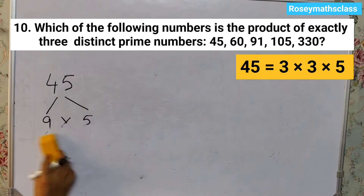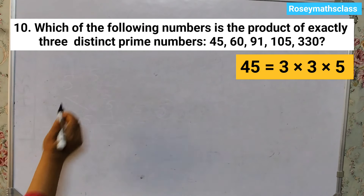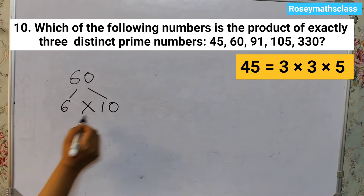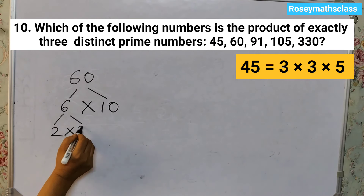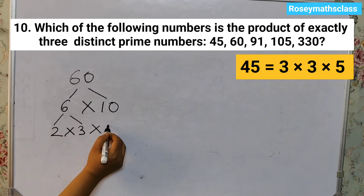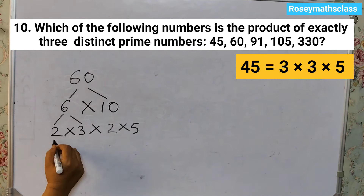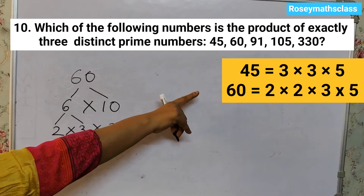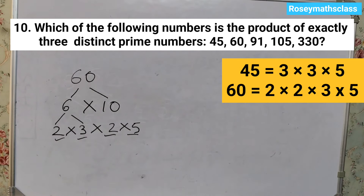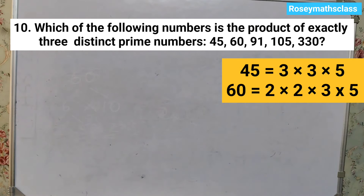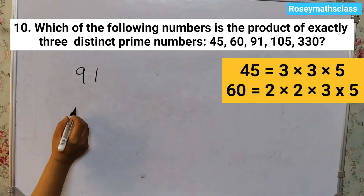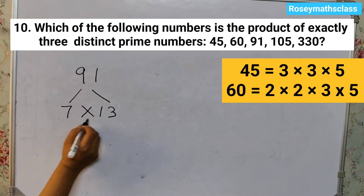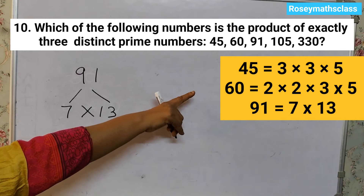Next number is 60. We can write it as 6 into 10, and 6 can be written as 2 into 3, and 10 can be written as 2 into 5. So 60 is 2 into 2 into 3 into 5 — that gives 4 prime factors. Next is 91. 91 is 7 into 13, just 2 prime factors.